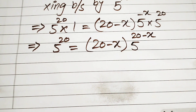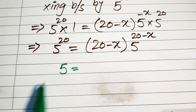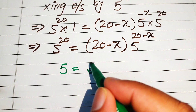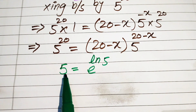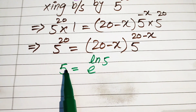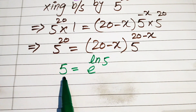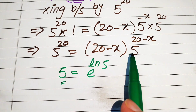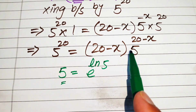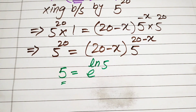We use the fact that 5 can be written as e to the power of log of 5. This means applying log and anti-log at the same time gives e to the power of log 5, since they cancel each other. We then write 5 to the power of 20 minus x in the form e to the power of log of 5 to the power of 20 minus x.